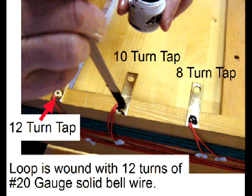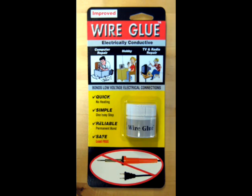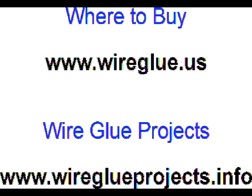Now, the wire glue, which is available in a blister pack that comes as a jar, is used to seal the connections for the taps, and later on will also be used to construct the capacitor. You can learn about where to buy the wire glue, which is available both through the internet and at retail through the www.wireglue.us website. And also the complete diagrams and mechanical layout for this project can be found at the www.wireglueprojects.info website.